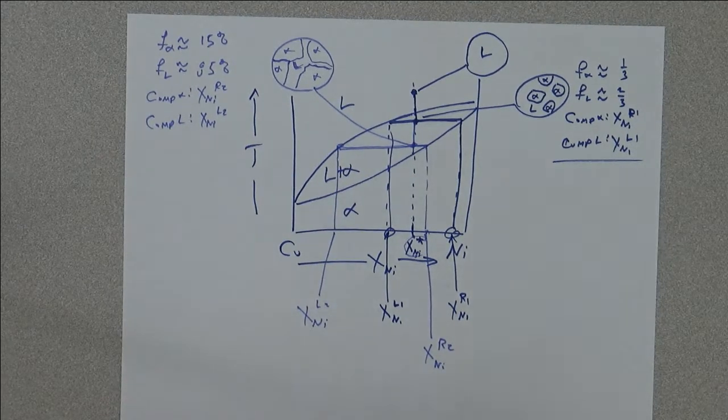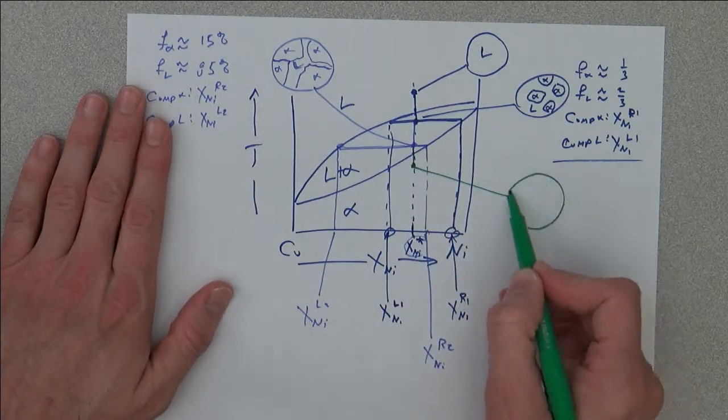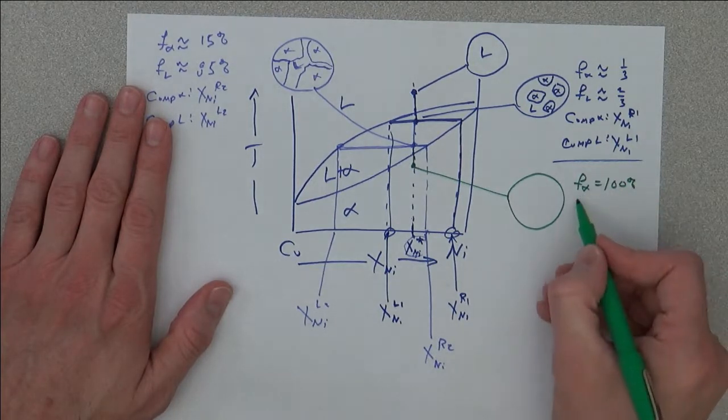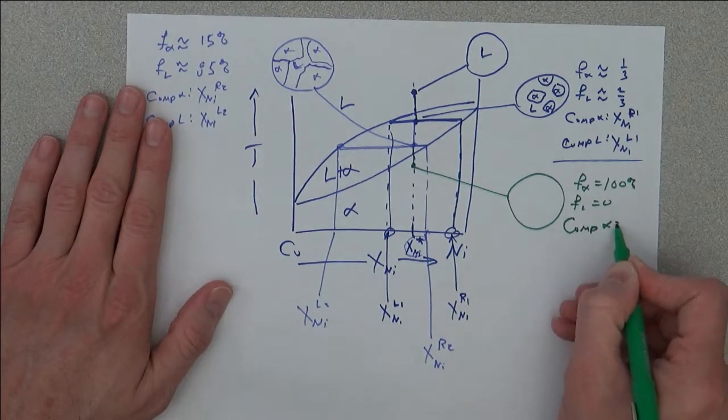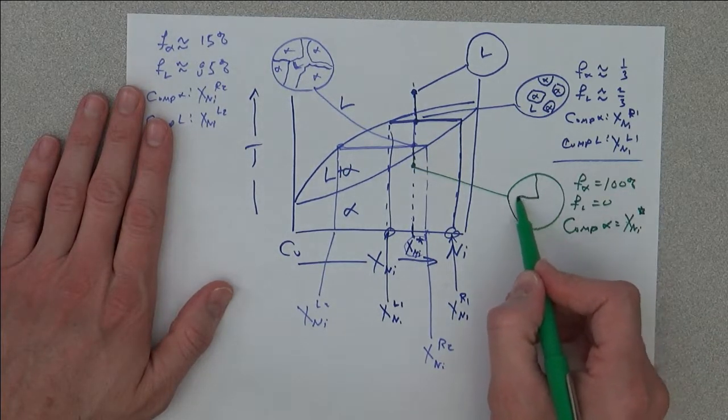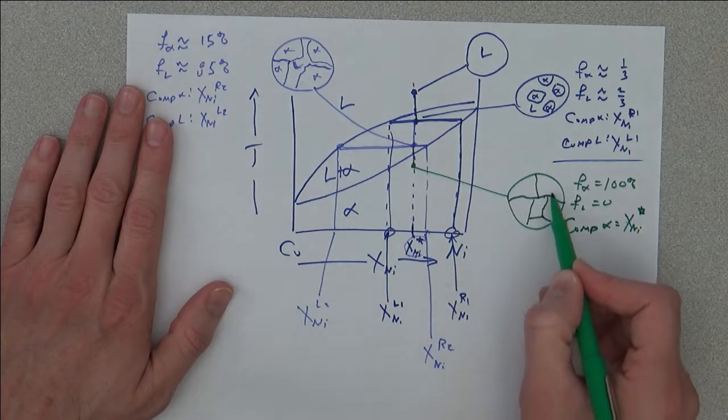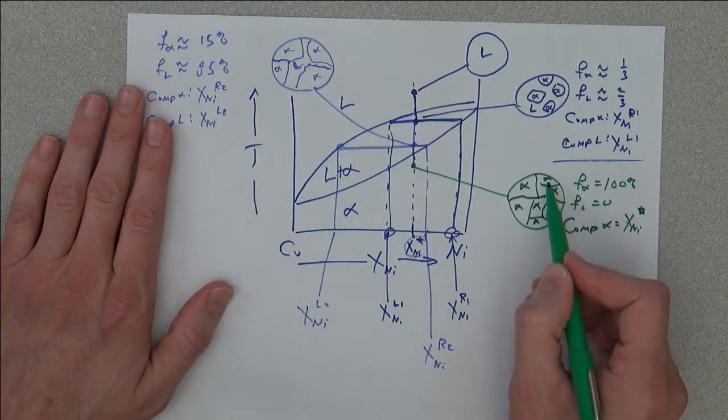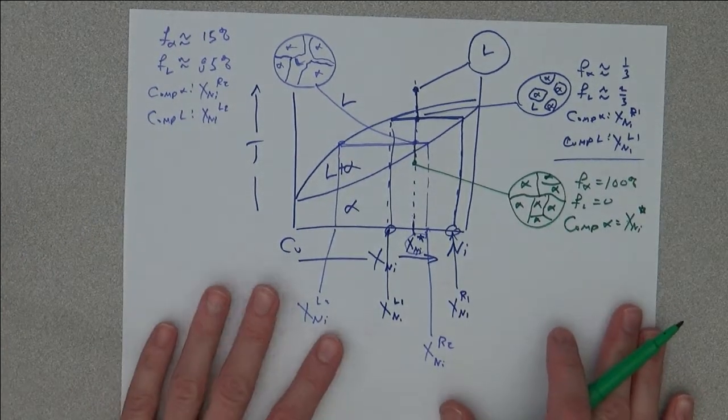Lastly, let's say I cool down. Now the fraction of alpha equals 100 percent, fraction of liquid equals zero, and composition of alpha equals X_Ni*. So we have something that looks like all alpha. This is kind of the basics of how to read the phase diagram.